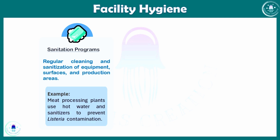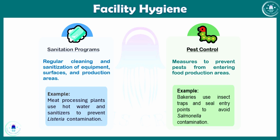The second aspect of facility hygiene is pest control, which is used to prevent pests from entering food production areas. For example, bakeries use insect traps and seal entry points to avoid Salmonella contamination from pests.